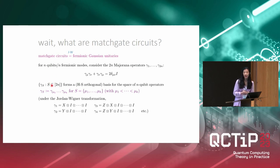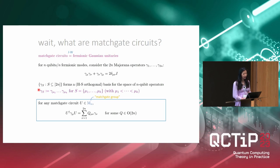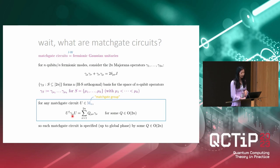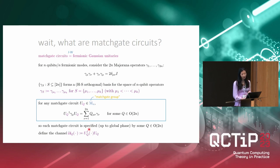For any subset of indices S from the set 1 to 2n, we use gamma_S to denote the product of Majoranas with indices in S in increasing order. There are 2^(2n) of these products and they form a basis for the space of n-qubit operators — under the Jordan-Wigner transformation, each product of Majoranas maps to a different Pauli string. For any matchgate circuit U, if we conjugate a Majorana operator by U, we get a linear combination of Majoranas, where the coefficients are given by some orthogonal matrix Q. This uniquely specifies the matchgate circuit up to a global phase, so each matchgate circuit corresponds to an orthogonal matrix Q. We use script U_Q to denote the quantum channel that conjugates by U_Q.